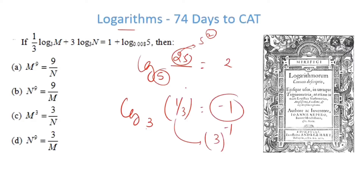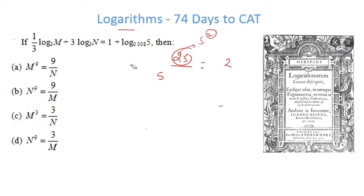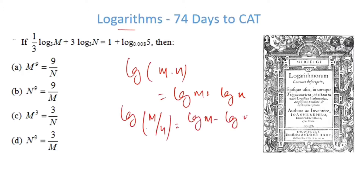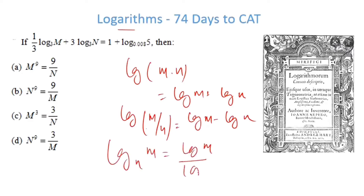Now let's talk about some key properties of logarithms. log(m × n) = log m + log n. Similarly, log(m/n) = log m − log n. Also, log base n of m can be written as log m / log n, where you can choose any base. And log(m^x) = x · log m — the exponent x comes down and multiplies.